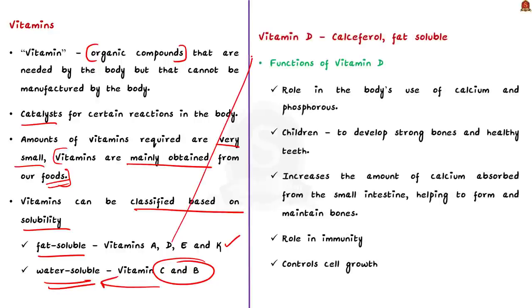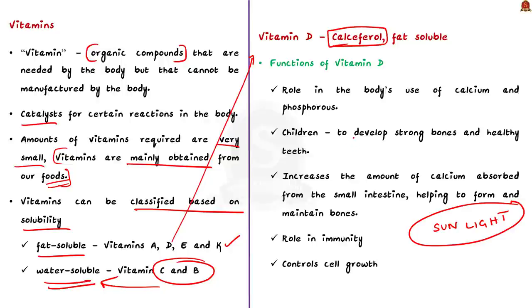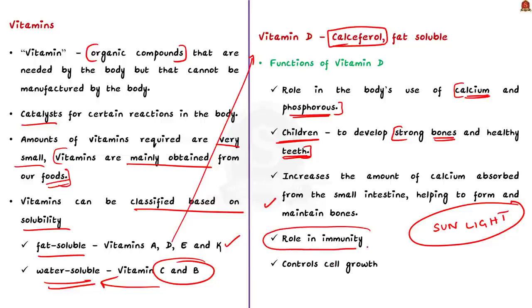Now let us see about vitamin D in particular. Vitamin D is also known as calciferol. Its unique property is that the body can synthesize this vitamin when exposed to sunlight. The most important function of vitamin D is that it plays a crucial role in the body's use of calcium and phosphorus. Children especially need adequate vitamin D to develop strong bones and healthy teeth. Vitamin D works by increasing the amount of calcium absorbed from the small intestine, helping to form and maintain bones. It also plays an important role in immunity and controlling cell growth.